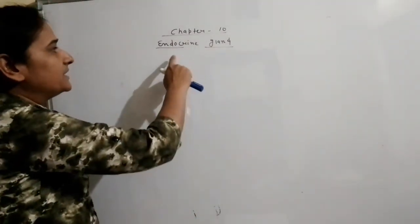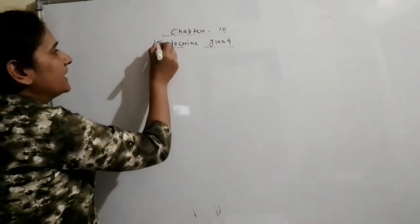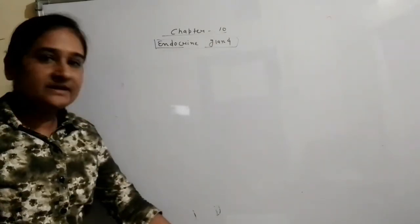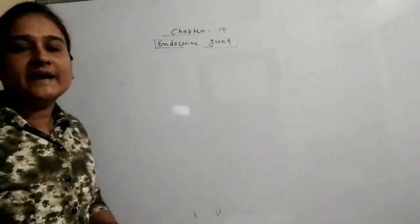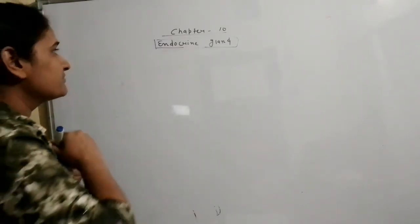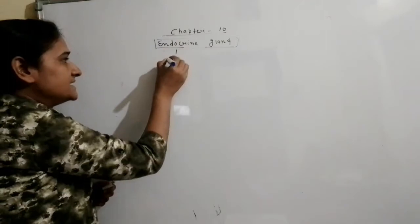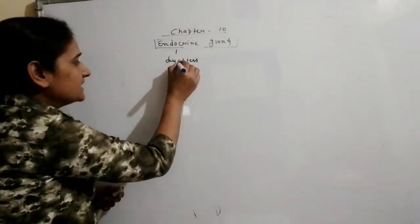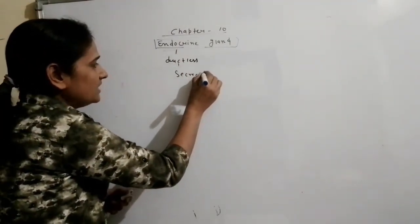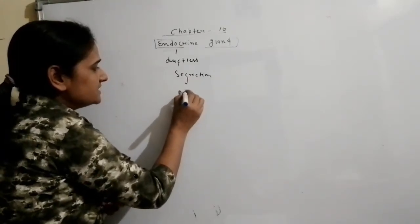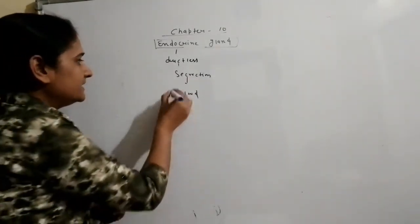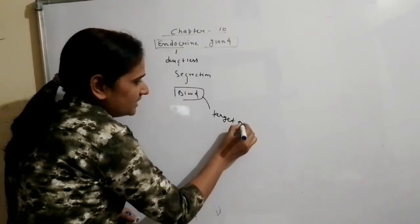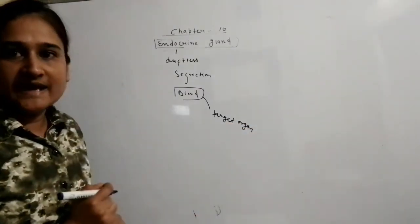Hello students, we continue chapter 10. Today's topic is the endocrine gland. We studied in previous classes the difference between the endocrine gland and the exocrine gland. The endocrine gland is a ductless gland — its secretion is discharged into the blood, and the blood supplies the secretion to the target organ. This type of gland is known as the endocrine gland.